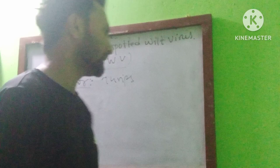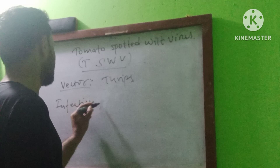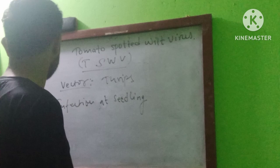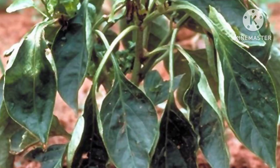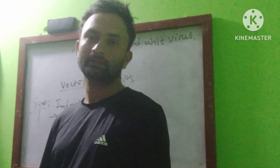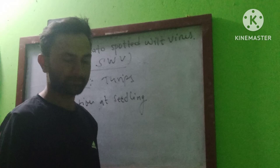Infection settling. Symptoms: first, extremely stunted growth — it may stunt growth. Leaves are called ultra-alloying.